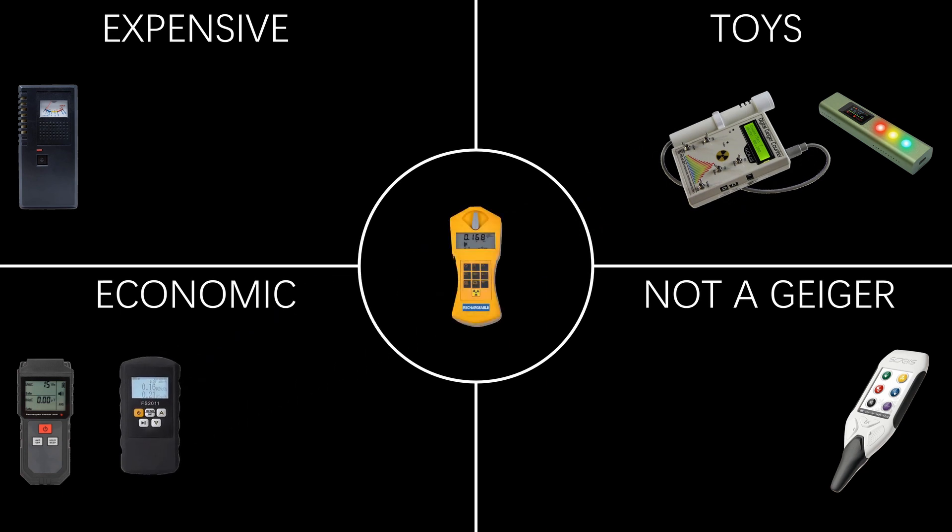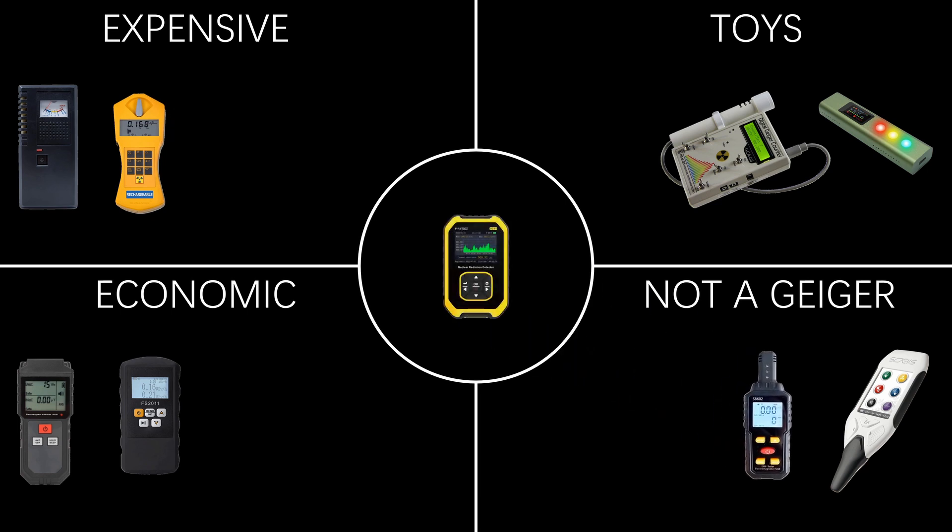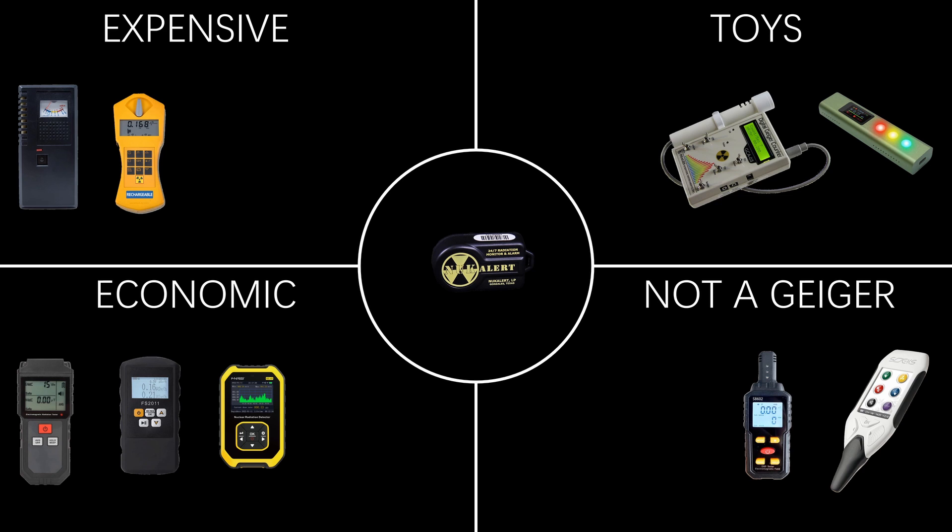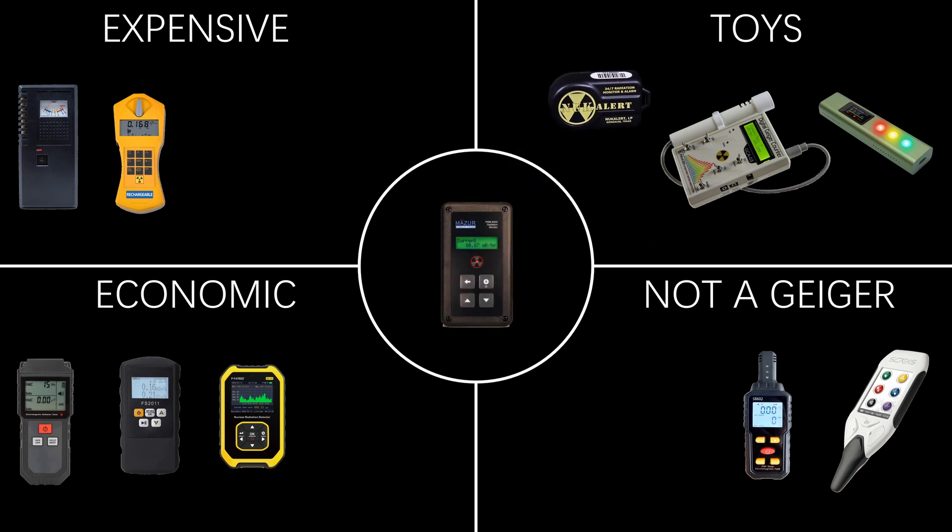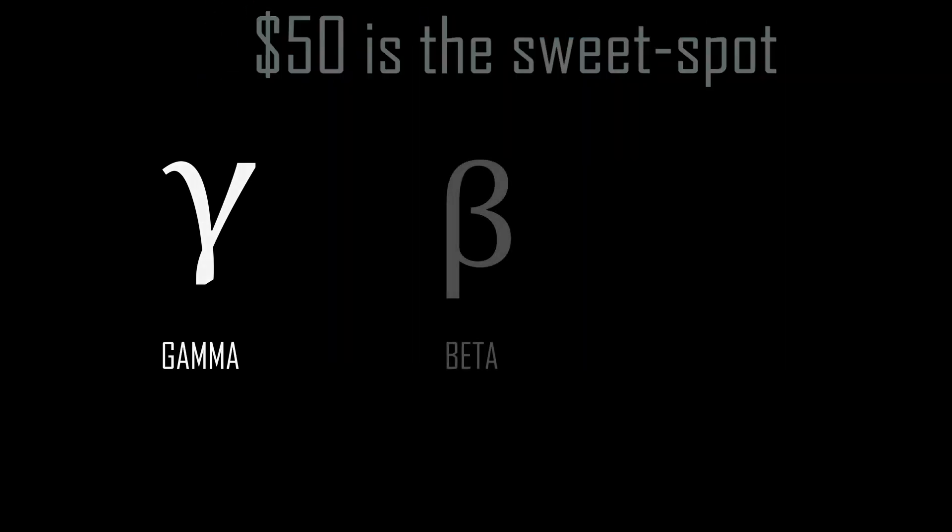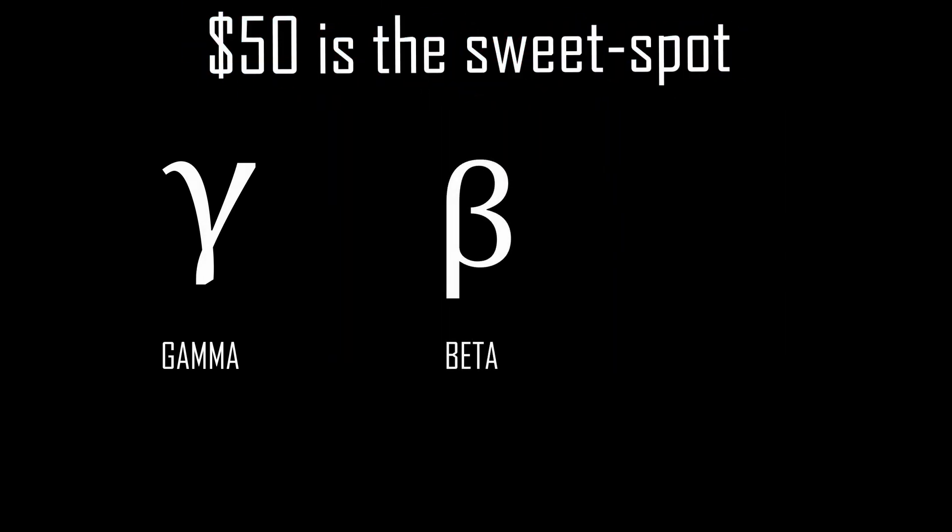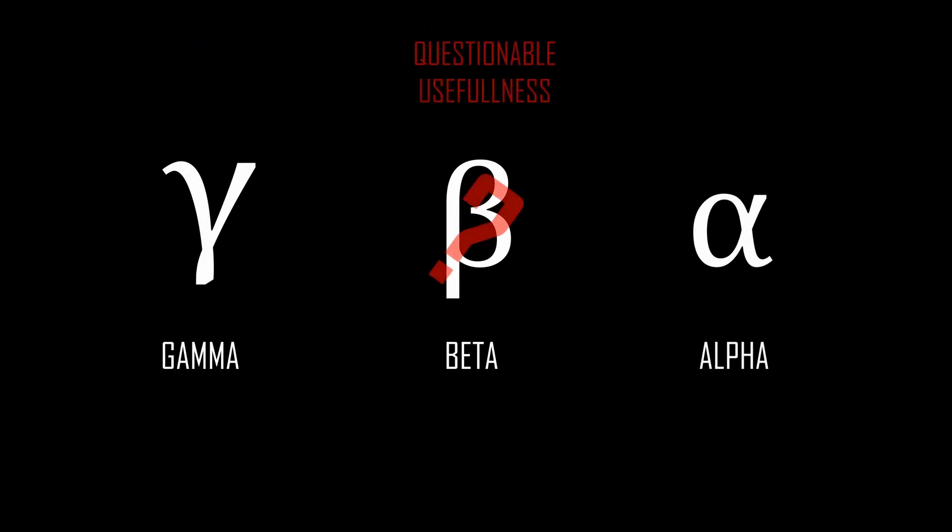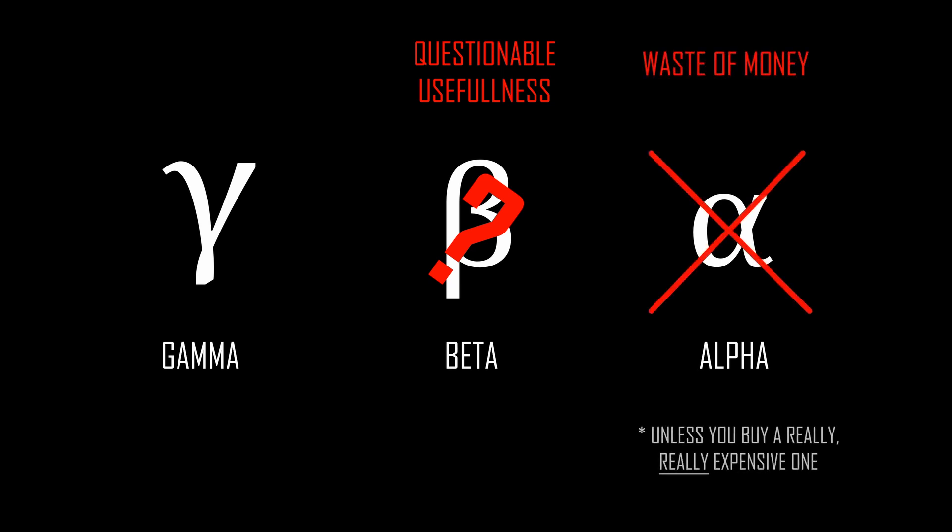There are a lot of shitty Geiger counters out there on the market, and some of the things that Amazon will present from a search are not even Geiger counters at all. A suitable device uses a Geiger Muller tube to detect radioactive emissions. It only really needs to be sensitive to gamma radiation, and unless you have a budget of thousands of dollars, then it is unlikely to have a decent level of sensitivity to alpha or beta radiation anyway. So don't bother with models that claim to be able to detect alpha particles in particular, because it is totally pointless for this application.